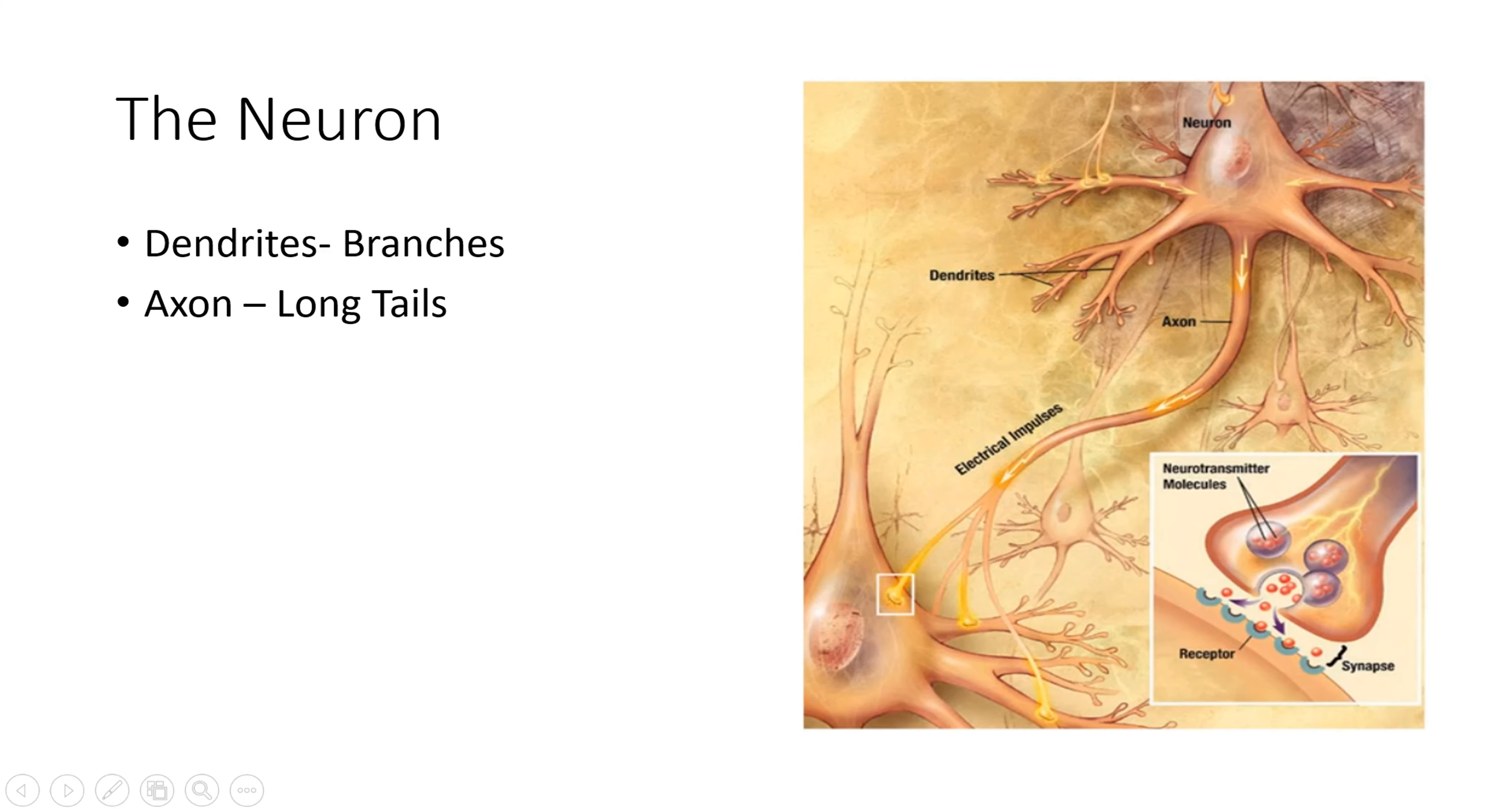Dendrites are the receivers of the signal. The axon is sending the signal from here, it's coming to this giant part, and from the nucleus it comes to this dendrite. The axon acts as a transmitter.